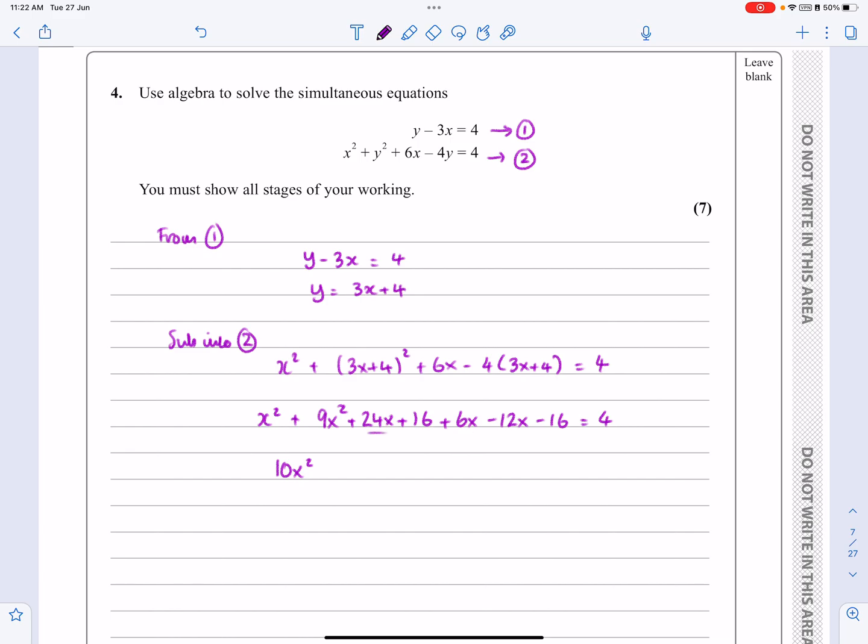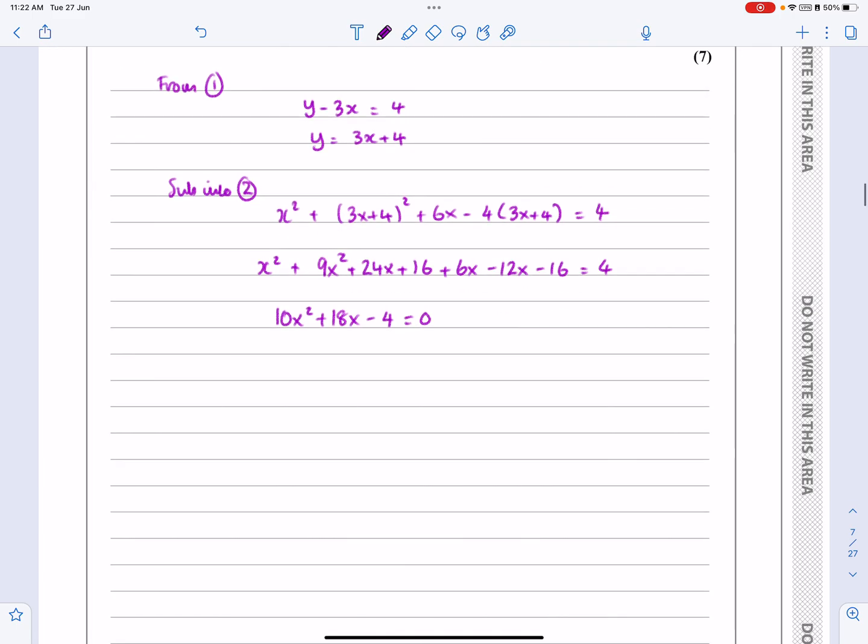Be careful, there's three x terms that all tidy up to +18x. And I've got +16 and -16 that cancel, but I've got the 4 on the other side, so it ends up as -4. So 10x² + 18x - 4 = 0.